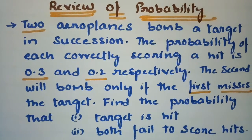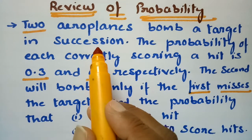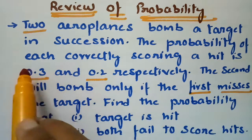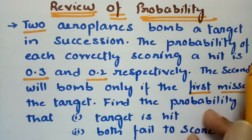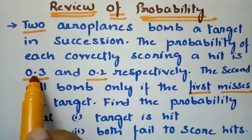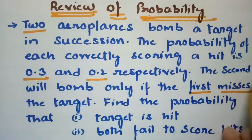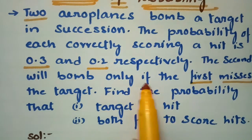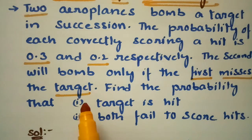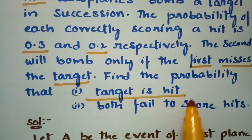There are two aeroplanes bombing a target in succession. If the first one fails, the second one will hit the target. The probability of each correctly scoring a hit is 0.3 and 0.2. The second will bomb only if the first misses the target — if the first one misses, the second one will plunge into action.